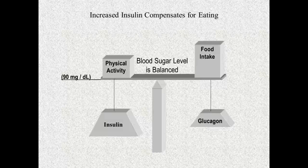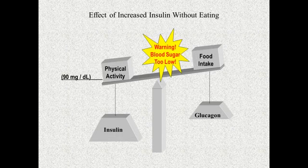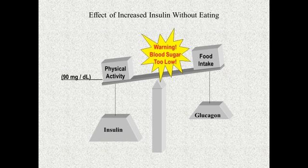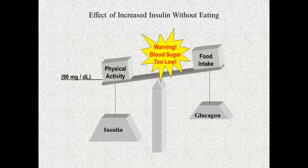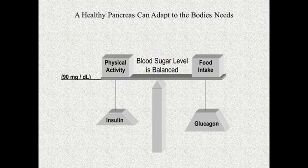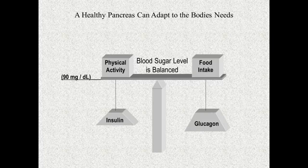On the other hand, if someone with diabetes takes a shot of insulin without eating anything, that causes blood sugar to go dangerously low. This has a very negative effect on the brain — brain and nervous system cells don't have starch storage the way muscles do, and they are in danger of shutting down. So if blood sugar goes too low, people can become unconscious or have seizures. In a normal person, if blood sugar became too low, the pancreas would stop secreting insulin, secrete some glucagon, and bring blood sugar back up to its balanced level.